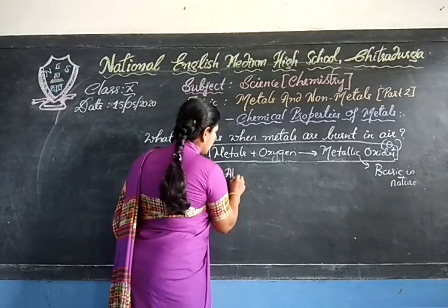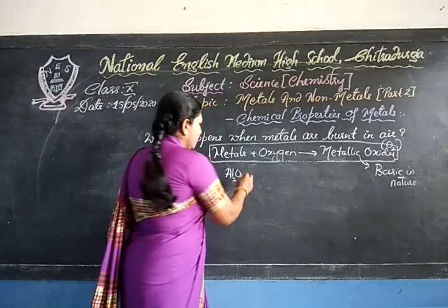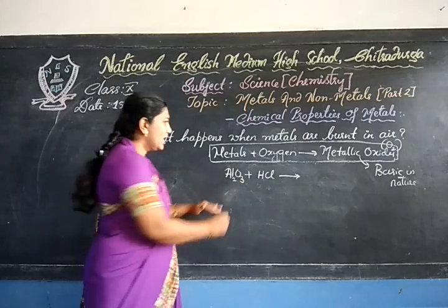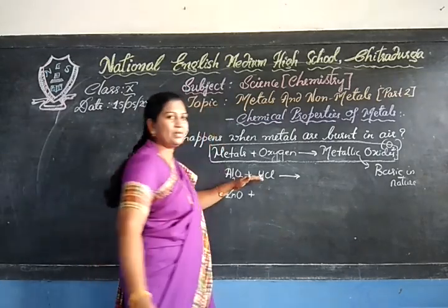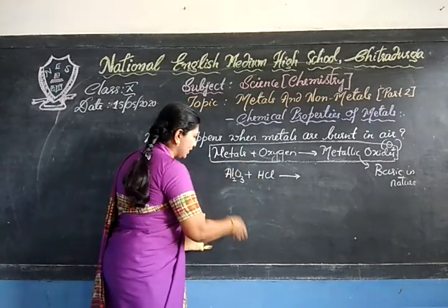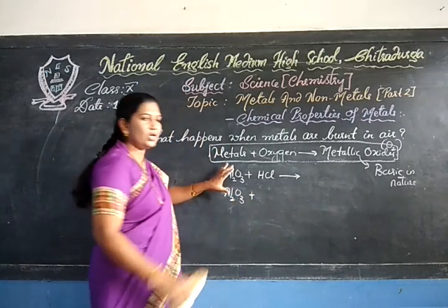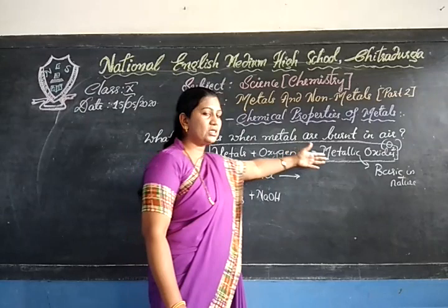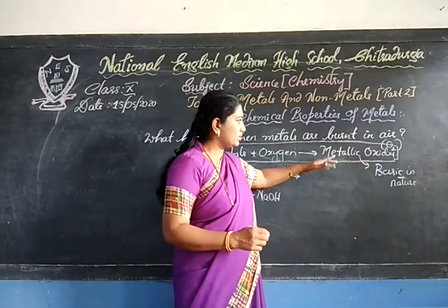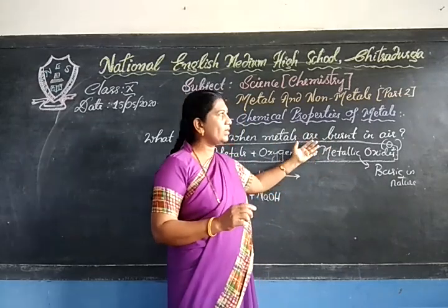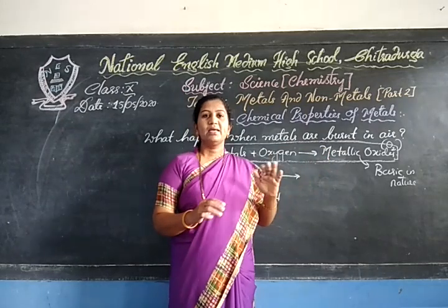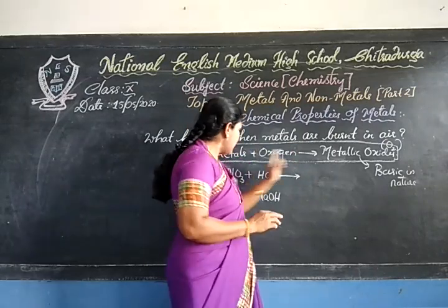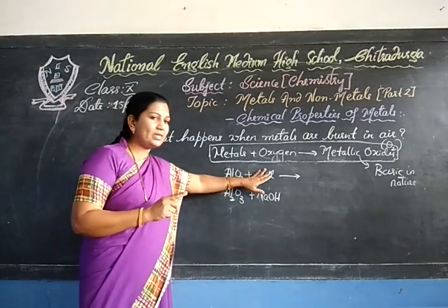Here I will show you. Aluminium oxide reacts with hydrochloric acid. These oxides — aluminium oxide as well as zinc oxide — react with both acid as well as base. Other oxides like cupric oxide, zinc oxide, and magnesium oxide will show only basic nature; they will not react with a base, only with an acid. But aluminium oxide and zinc oxide will react both with acid as well as base.